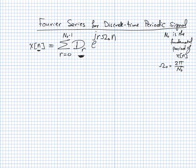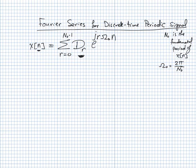Notice the difference: we don't sum from minus infinity to infinity. We sum only over one period. In the continuous-time Fourier series expansion, we summed from minus infinity to infinity. Here the summation is only over one fundamental period — because the frequency domain is periodic for discrete-time signals. That's why we sum only over one period.